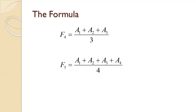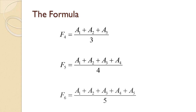If we want a four-period simple moving average, we just increase the number of points averaged to four. And if we want a five-period simple moving average, we just increase the number of points averaged to five. This is all there is to it.